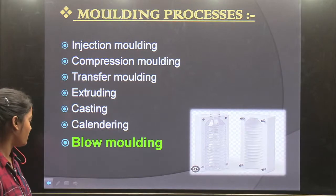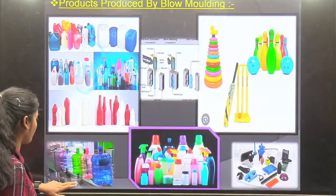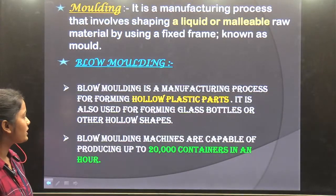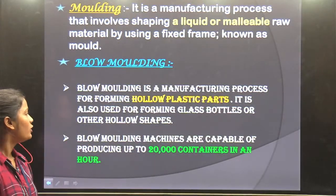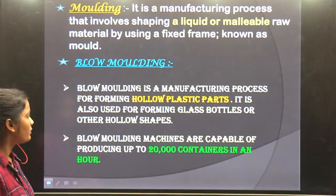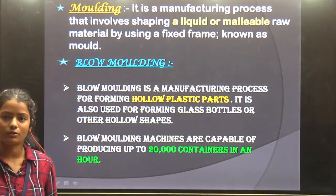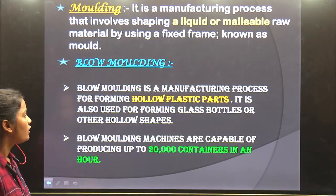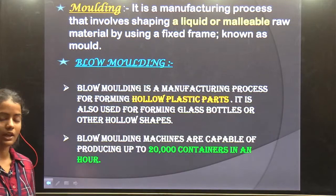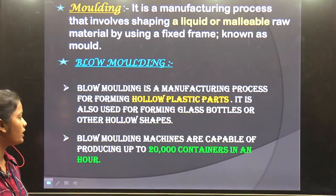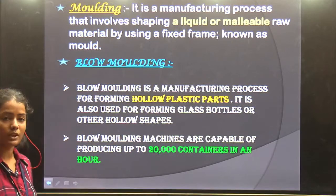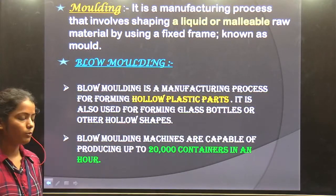Now we are going to focus on Blow Molding. The definition of Blow Molding: it is a manufacturing process in which we manufacture hollow plastic parts. We use hollow parts like glasses or jars, and we use it to manufacture hollow shapes.